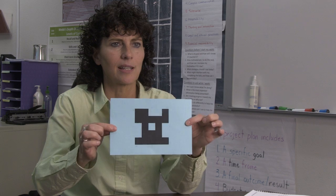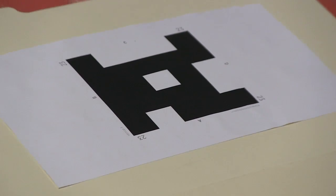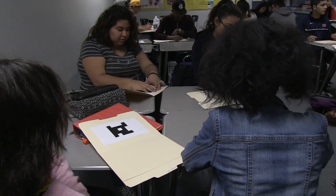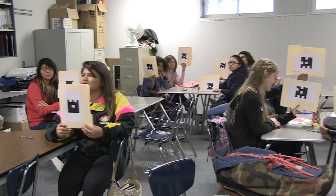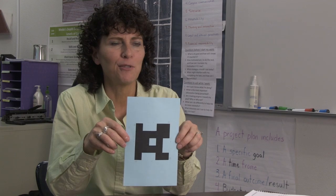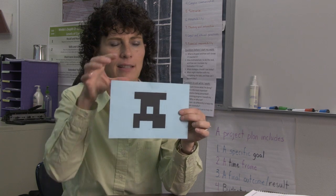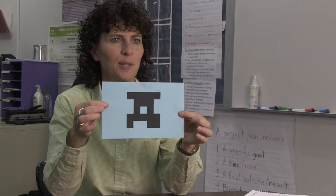The strategy is called Plickers. The teacher needs to have an app — you can download it on your phone or iPad — and then each student is given a card like this. The cards are numbered and each card has a different pattern on it. Depending on how you hold the card, it corresponds to an answer. For example, for a true-false question, true might correspond to the letter A, so the student rotates their card until the A is at the top, or you can use multiple choice questions.